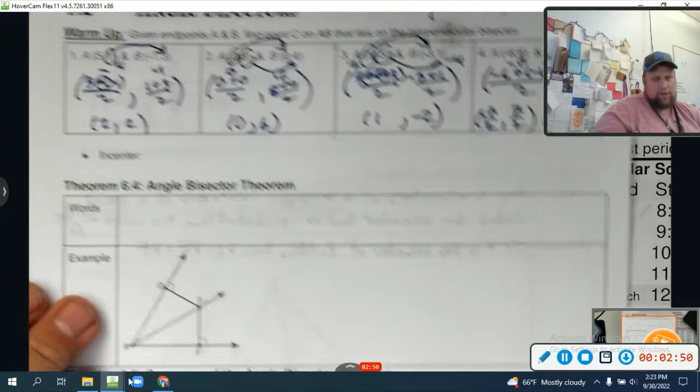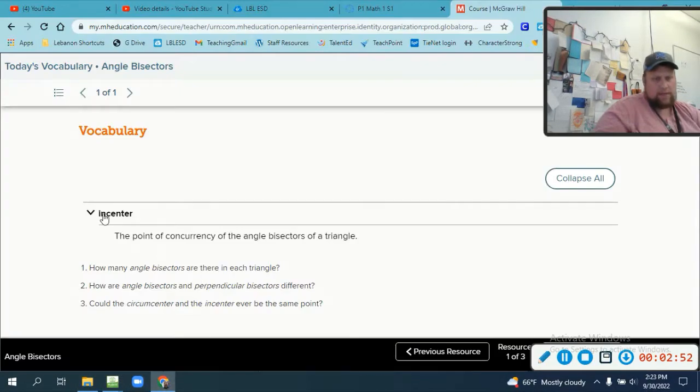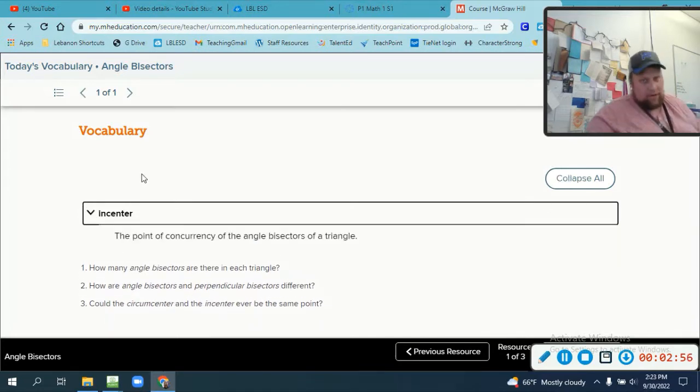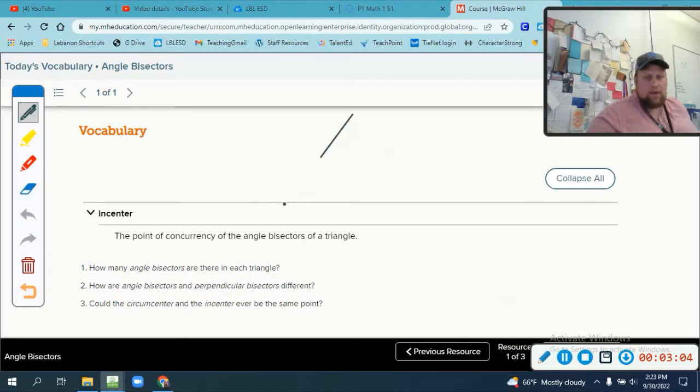Boom, let's move on with this. We have some vocab today. The incenter is the point of concurrency of the angle bisectors of a triangle. Remember, a point of concurrency is where the lines intersect.